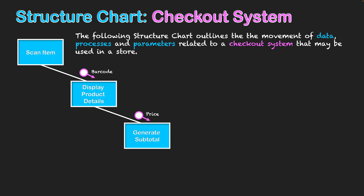The system gets the price of the product that got scanned and then uses that to generate a subtotal. As mentioned, this could be a grocery store checkout system where we're scanning multiple products, so these steps all involve repetition — we scan items over and over again, products appear on screen, and the subtotal is constantly being updated with every new item scanned.